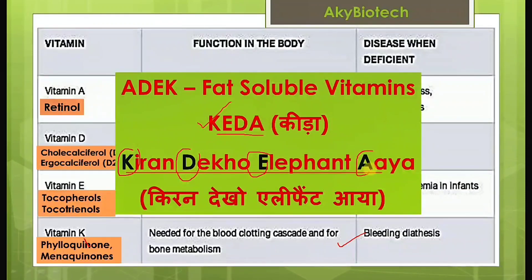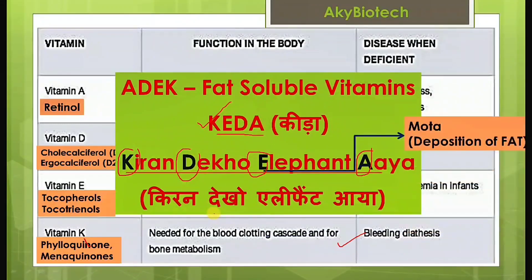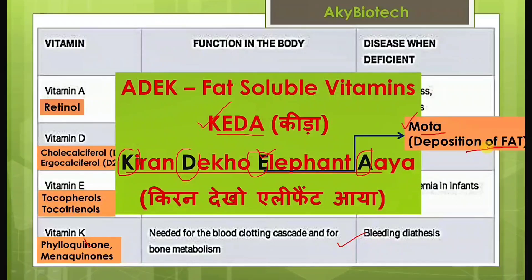These are the fat-soluble vitamins: K, D, E, and A. We can remember them by thinking of a big animal like an elephant, which represents the deposition of fat — so these are the fat-soluble vitamins.